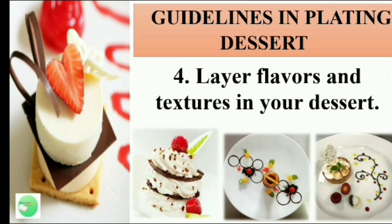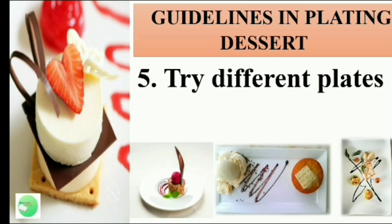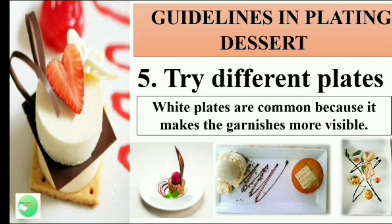Number 4, layer flavors and textures in your dessert. Textures and flavors hit the palate at different times. Ask yourself, how can I make this better? All the components on the plate should build on the dessert and make it better. Number 5, try different plates. White plates are common because they make the garnishes more visible — color white is commonly used in food plating so the design of each food is clearly seen. Various sizes and shapes are also considered. The right plate can add or enhance the theme really well.